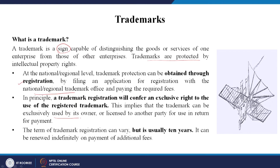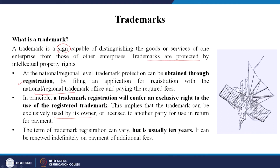In principle, trademark registration confers an exclusive right to use the registered trademark. If you have given a name to a company and registered it, no one else can use it. This implies the trademark can be exclusively used by its owner or licensed to another party for payment. This has happened a lot with websites — people purchase domain names and save them, then sell them at higher prices when those names become famous. The term of trademark registration is usually 10 years and can be renewed indefinitely.